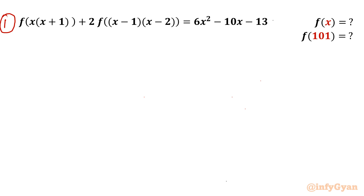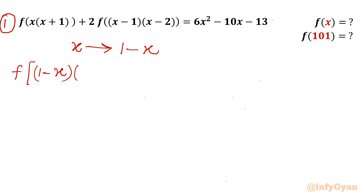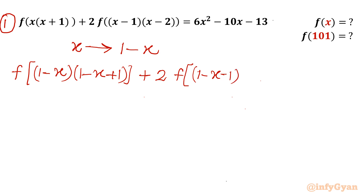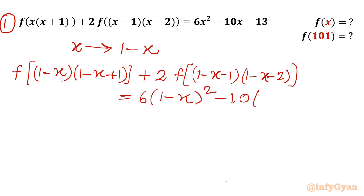Now I will consider a change of variable. I will replace the functional variable x with (1 - x). So I will write our equation as f(1-x)·(1-x+1) + 2·f(1-x-1)·(1-x-2), and the right-hand side becomes 6·(1-x)² - 10·(1-x) - 13.